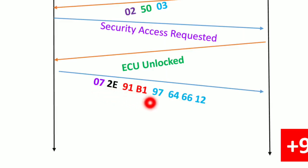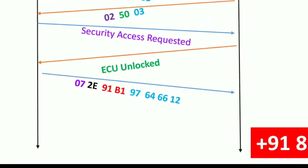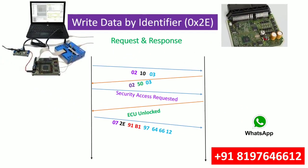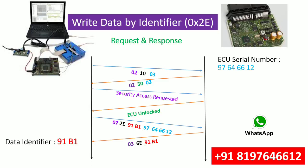So in this single frame: 0x07 is the PCI length, 0x2E is the service ID, 0x91B1 is the DID, and the remaining bytes are the serial number data. After writing, the ECU acknowledges the data written into DID 0x91B1. The ECU serial number written is 97646612.